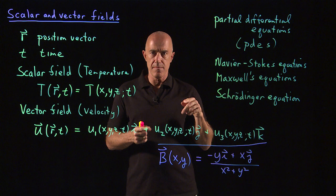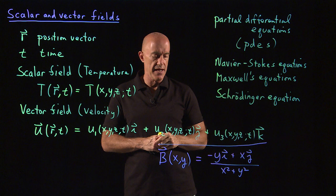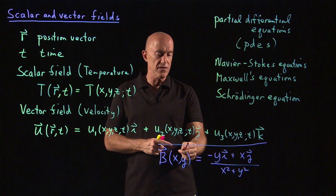It actually has a physical significance. This is proportional to the magnetic field circling an infinite wire containing a current. An infinite length wire containing a current. And the wire is pointing in the z direction. So this is a vector field.